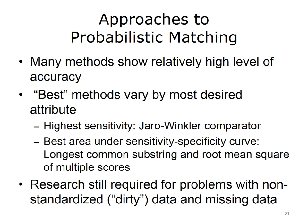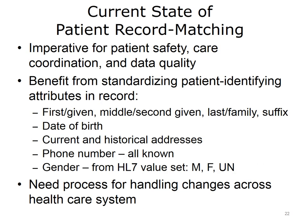A report from the Office of the National Coordinator for Health IT examined the current state of patient record matching and noted that accurate patient record matching was imperative due to issues of patient safety, care coordination, and data quality. The report noted that current state-of-the-art record matching worked relatively well but would benefit from standardizing patient-identifying attributes in electronic health records and other data sources, including standards for first, middle, and last names, suffixes, birthdates, times, current and historical addresses, phone numbers, and gender. There should also be a process for handling changes when names, addresses, and other attributes change across the healthcare system.